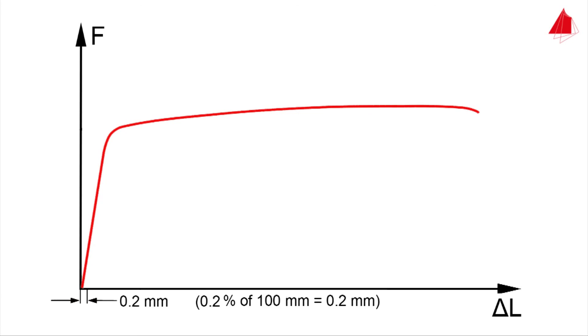And this is the way to calculate it. First of all, the elongation that corresponds to 0.2 percent of strain has to be computed. For an initial gauge length of 100 millimeters, the result is 0.2 millimeters. In the force-elongation diagram, a straight line parallel to the elastic line is drawn through the offset point of 0.2 millimeters of elongation.